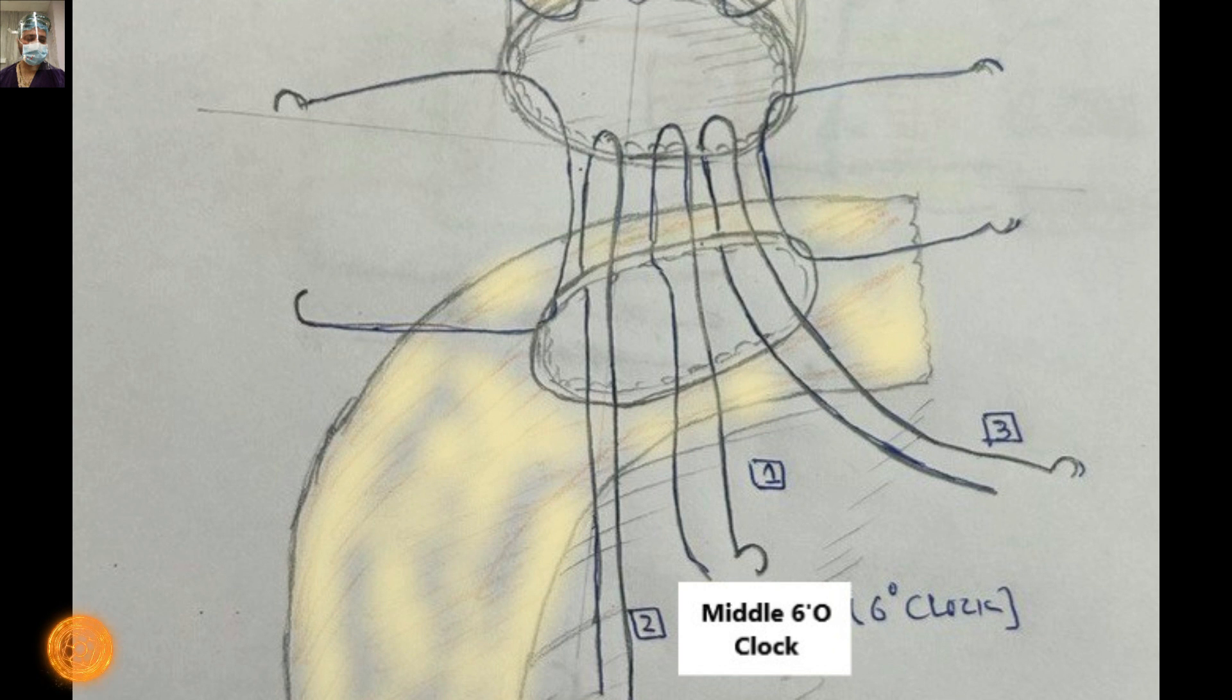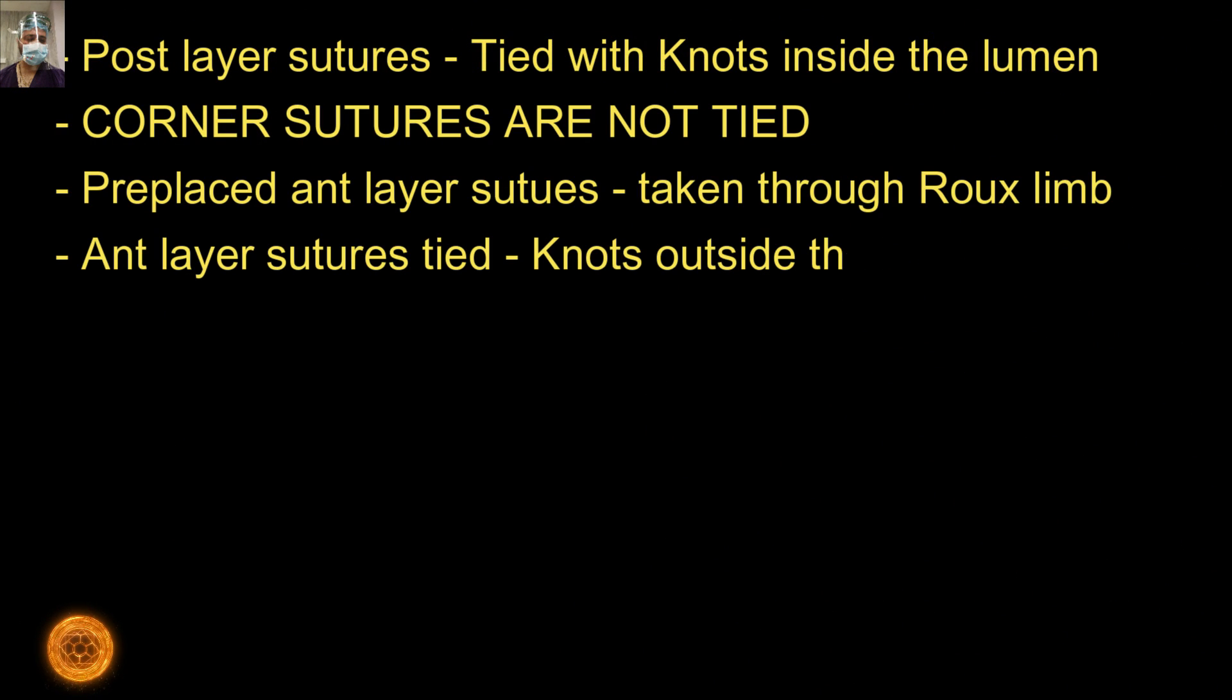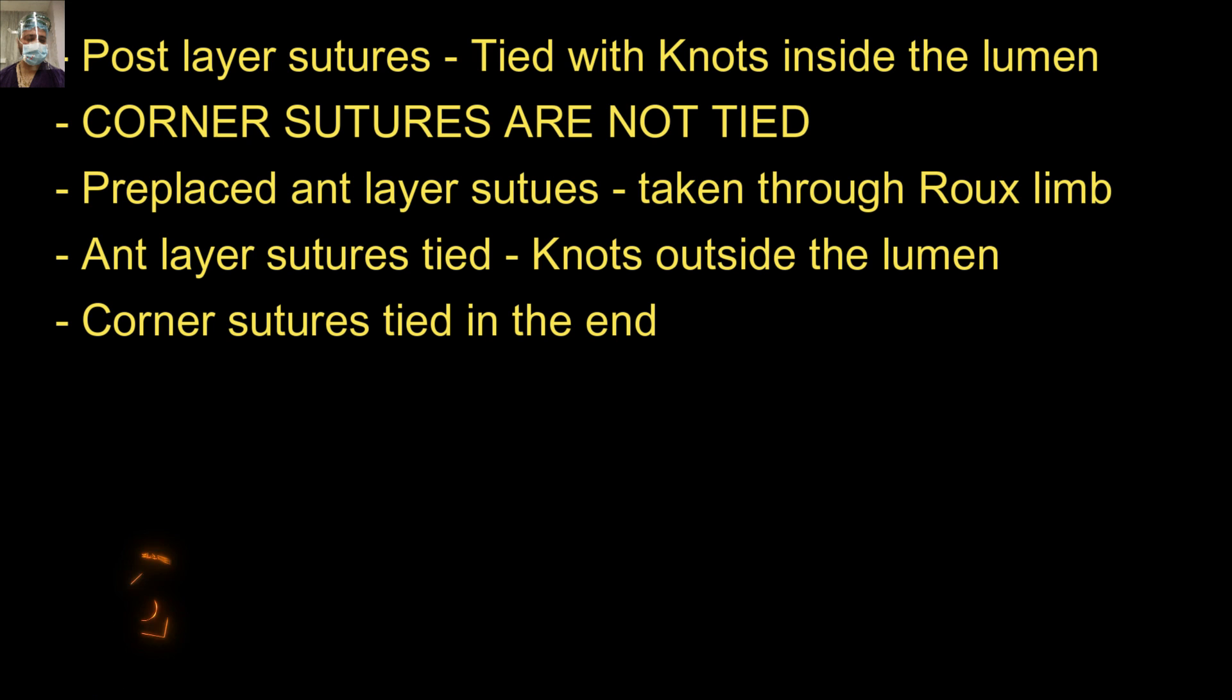After taking these three posterior layer sutures we tie them. We always start tying from the right side, from the surgeon's side. All the knots are inside the lumen. More sutures may be added if required. Roughly these three anterior, three posterior, two corner sutures are sufficient to achieve a watertight closure. We should not apply undue sutures or unnecessary traction, otherwise that will lead to ischemia. Another important thing to remember is that esophagus lacks serosa, so this is the organ where the anastomosis will be tricky and there are high chances of failure.